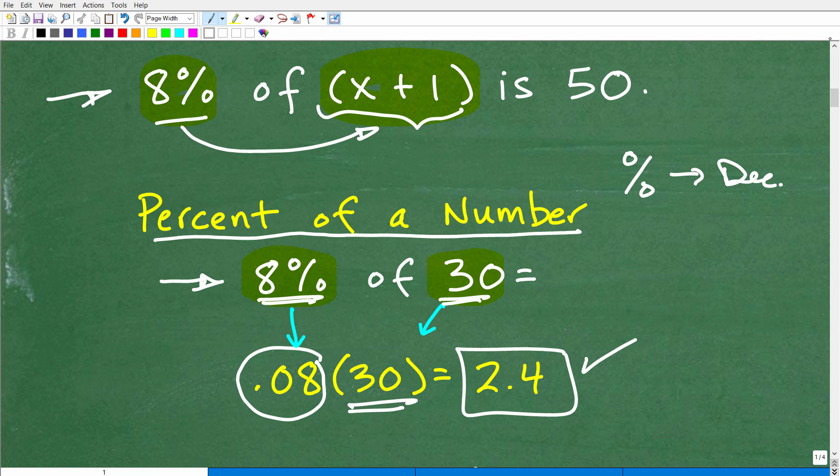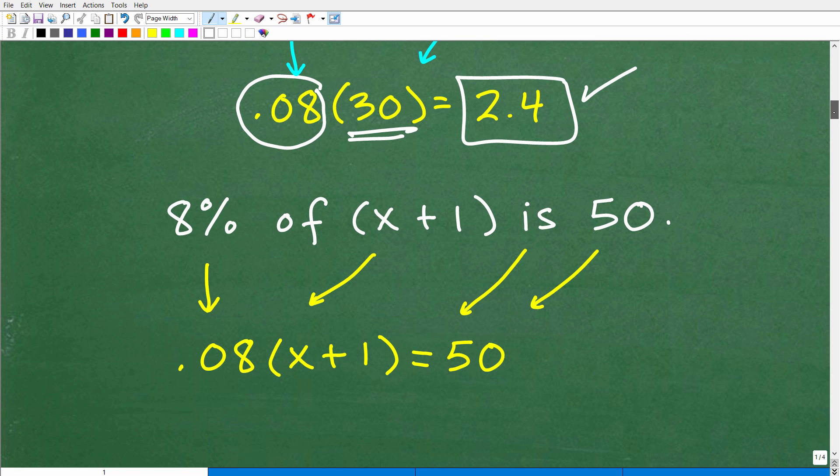So these are just real basic foundational percent skills that hopefully you understand. If you are rusty on this, then that's probably a pretty good indication that you need to go back and review percent. So first step, we want to find a percent of a number, you change that percent to a decimal. So 8% is 0.08. Then we just simply multiply by that number. So 0.08 times 30, we can use our calculator, we'll get 2.4. So knowing that, if we want to find 8% of this number, we don't know exactly what it is. It's expressed as X plus 1. We're basically going to follow the same pattern here, but we have some additional information right there as well.